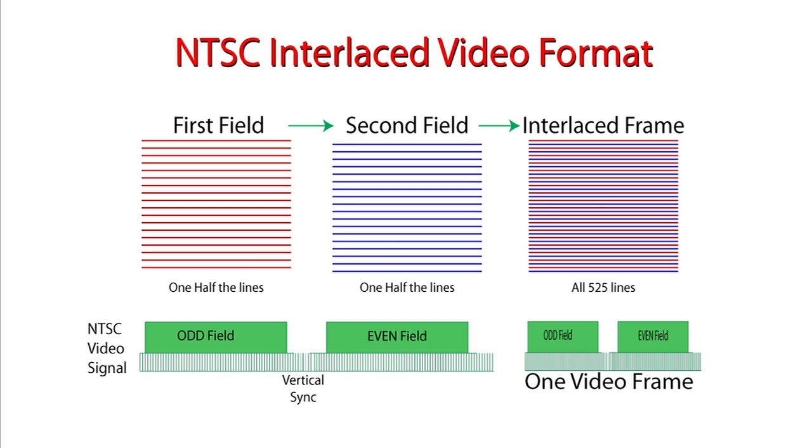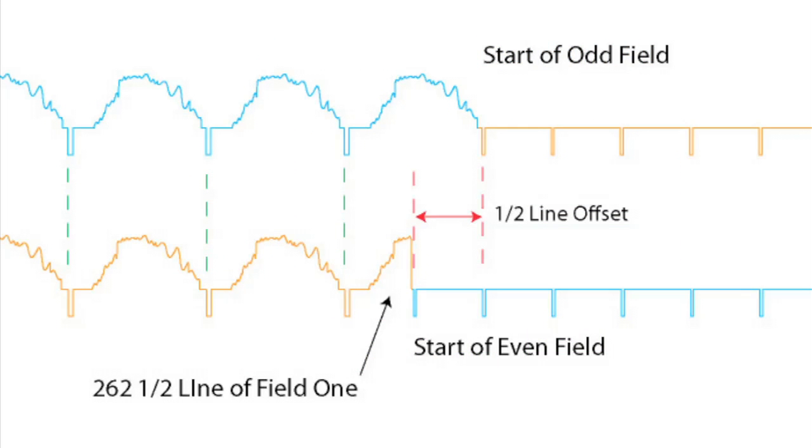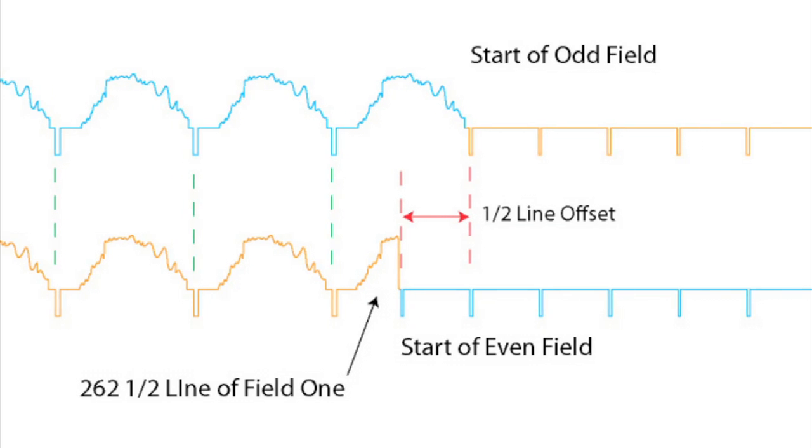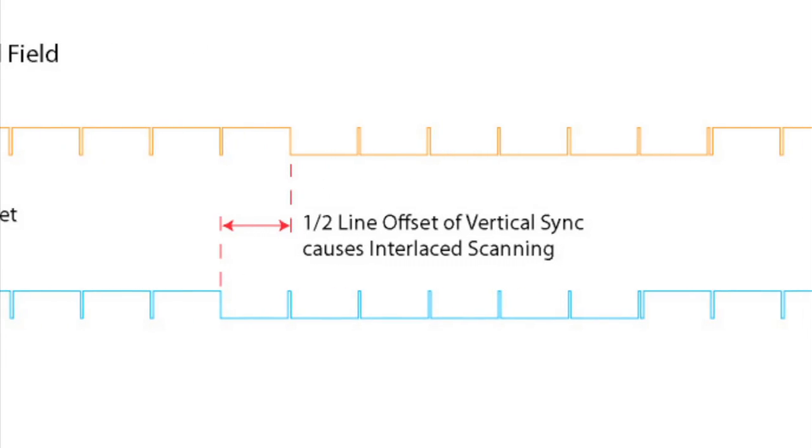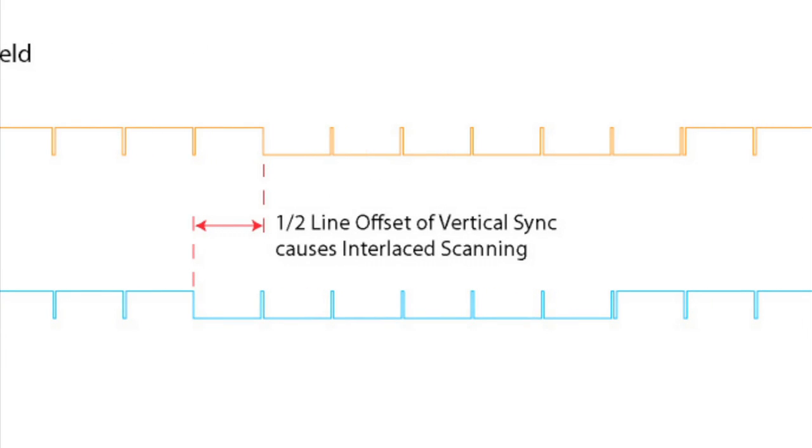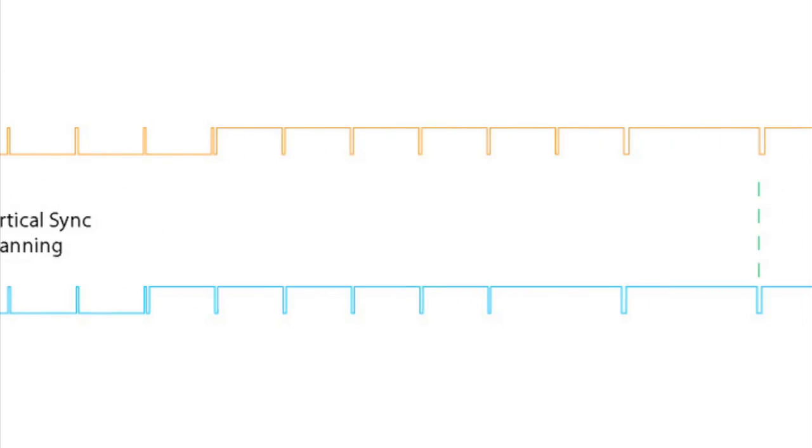This half-line offset is what makes possible the interlaced format of NTSC video. Because the starting point for vertical sync in each field is offset from one another by half a line, this causes a delay in the scanning of the CRT screen in the original monitors. This places the next field's lines in between that of the field before, thus producing an interlaced video display.